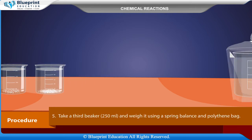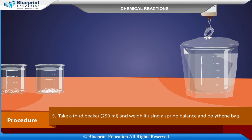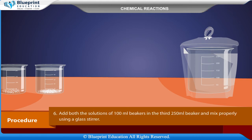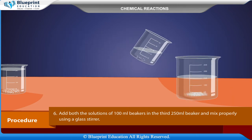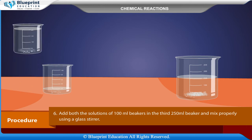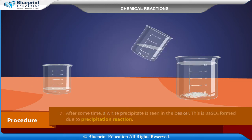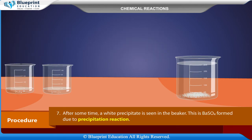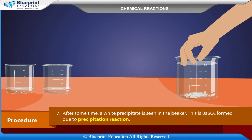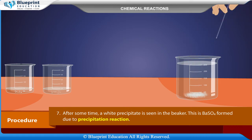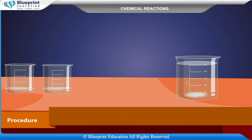Take a third beaker of 250 ml and weigh it using a spring balance and polythene bag. Add both the solutions from the 100 ml beakers into the third 250 ml beaker and mix properly using a glass stirrer. After some time, a white precipitate is seen in the beaker. This is barium sulfate, formed due to the precipitation reaction.